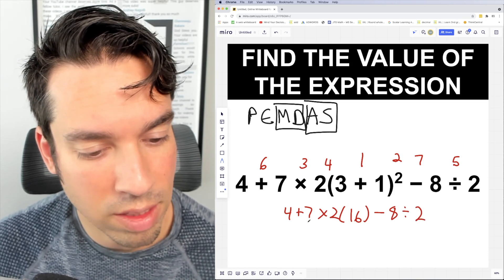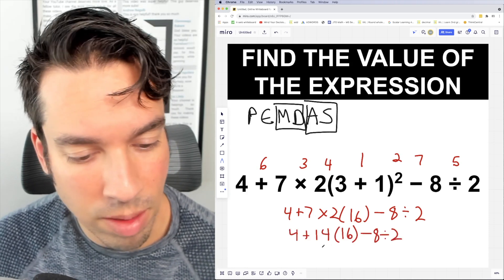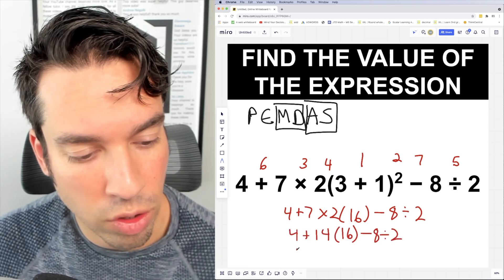Next on the list, number three is seven times two, which is 14. Then we're going to do 14 times 16, which is 224.